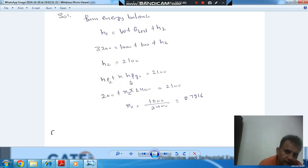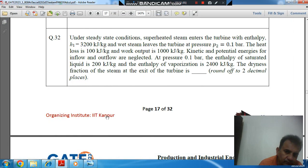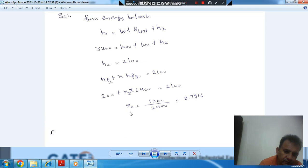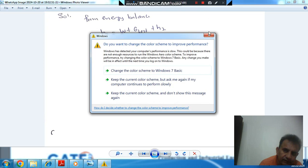The value of hf2 is given as 200 kilojoules per kilogram and enthalpy of vaporization hfg is 2400 kilojoules per kilogram. From this, by equating 2100 = 200 + x·2400, we can find x2, which equals 0.792 rounded to two decimal places.